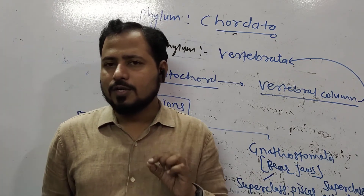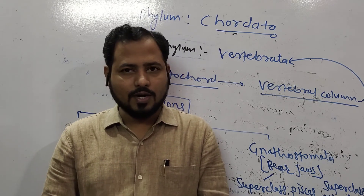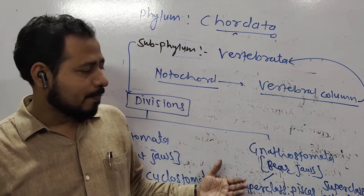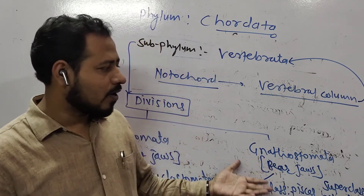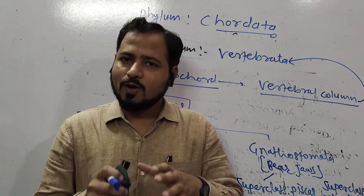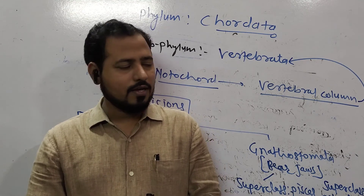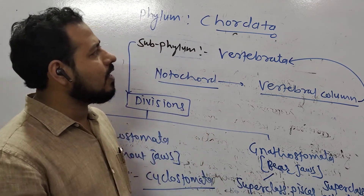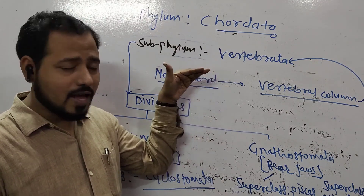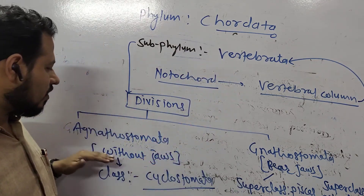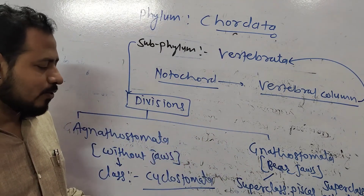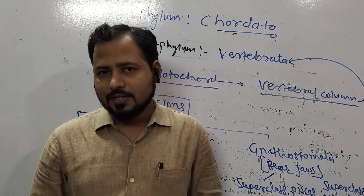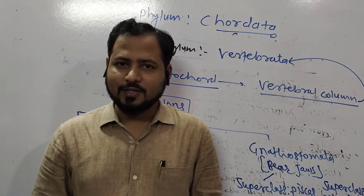In summary, this lecture covered introduction to Chordata. We studied Urochordata, Cephalochordata, and an introduction to Vertebrata. Vertebrata is divided into Agnatha and Gnathostomata — Agnatha has one class, Cyclostomata, while Gnathostomata has two super classes: Pisces with fins, and Tetrapoda with four appendages. In the next lecture, we will study Cyclostomata and other classes of Tetrapoda. Thanks for watching!